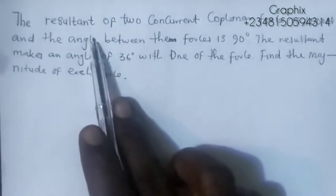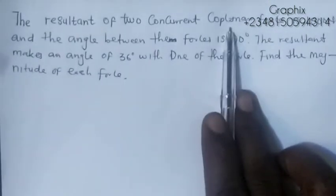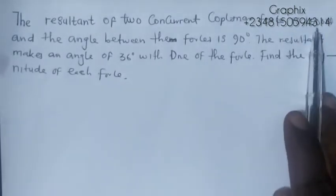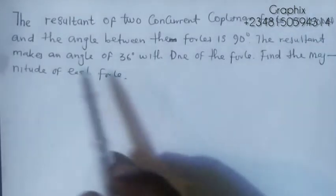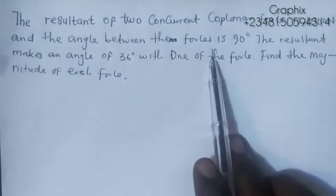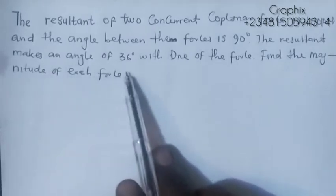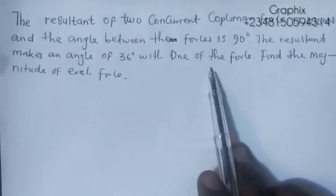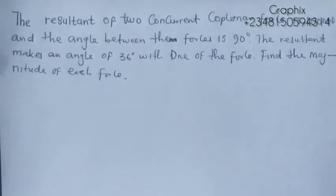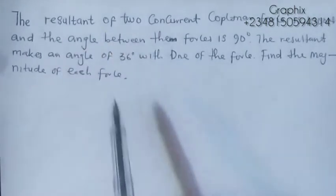The resultant of two concurrent coplanar forces is 1500 Newton, and the angle between the two forces is 90 degrees. The resultant makes an angle of 36 degrees with one of the forces. Find the magnitude of each force.